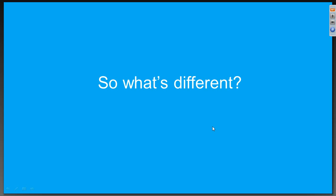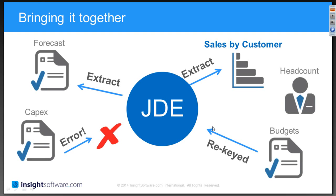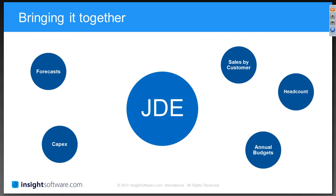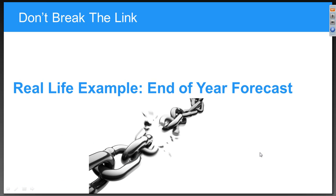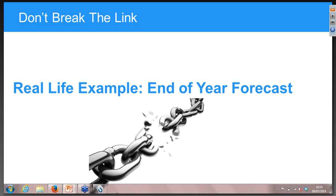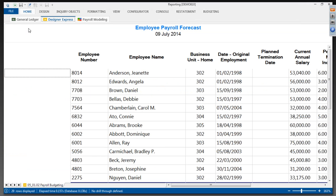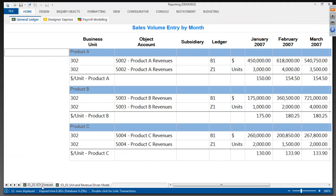So what's different with Insight? What we've done is developed a system where you can get rid of all of those different spreadsheets and databases and bring them all together into JD Edwards, so you actually get that integrated planning system that you've always wanted. We're going to show some live software — an example of not breaking the link. We're going to use a real-life example: the end-of-year forecast. I'm going to go across to Insight and into my end-of-year forecast screen.